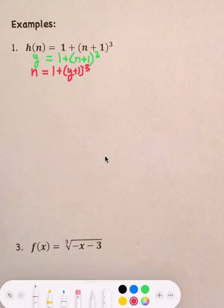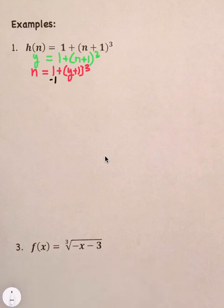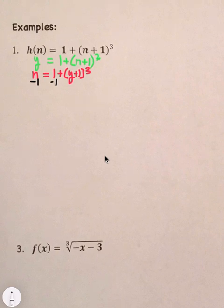Step three, solve for y. So, we're going to solve for y. We'll use black. So, that means we need to get everything on to the left-hand side. So, first we're going to subtract 1 on both sides. So, we're going to have n minus 1 equals y plus 1 to the third power.